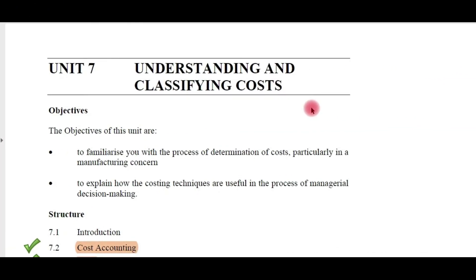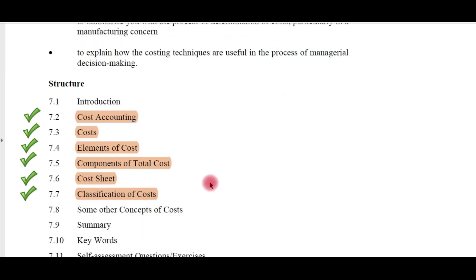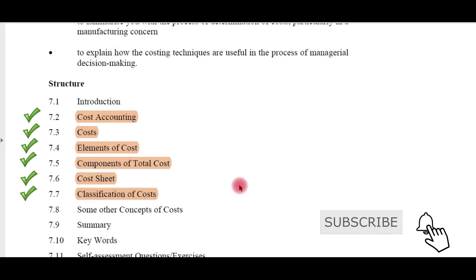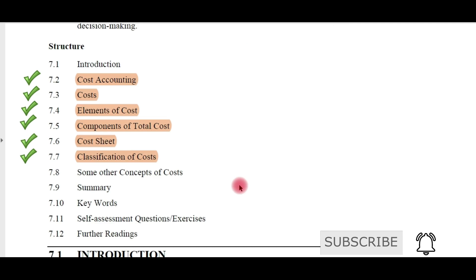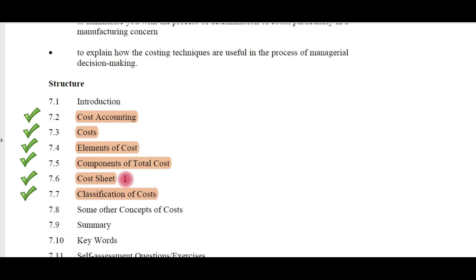This is unit number seven: understanding and classifying costs. In the previous videos we have already completed the definition of cost accounting, the definition of cost, elements of cost, components of total cost, how to prepare a cost sheet, elements of a cost sheet, and how to classify costs. The last topic remaining in this chapter is some other concepts of costs. Let us go to section 7.8.